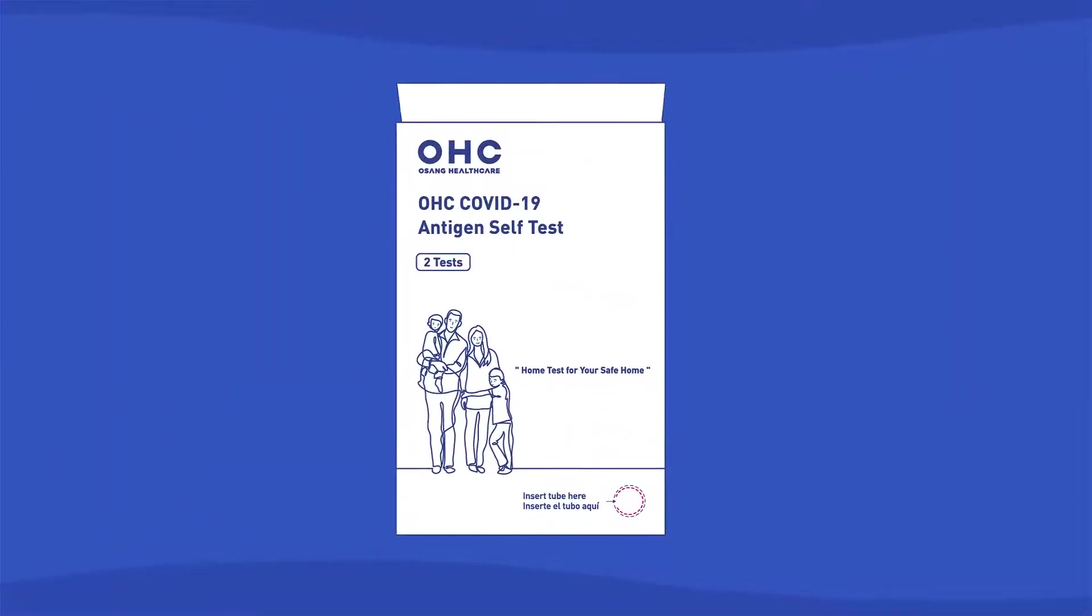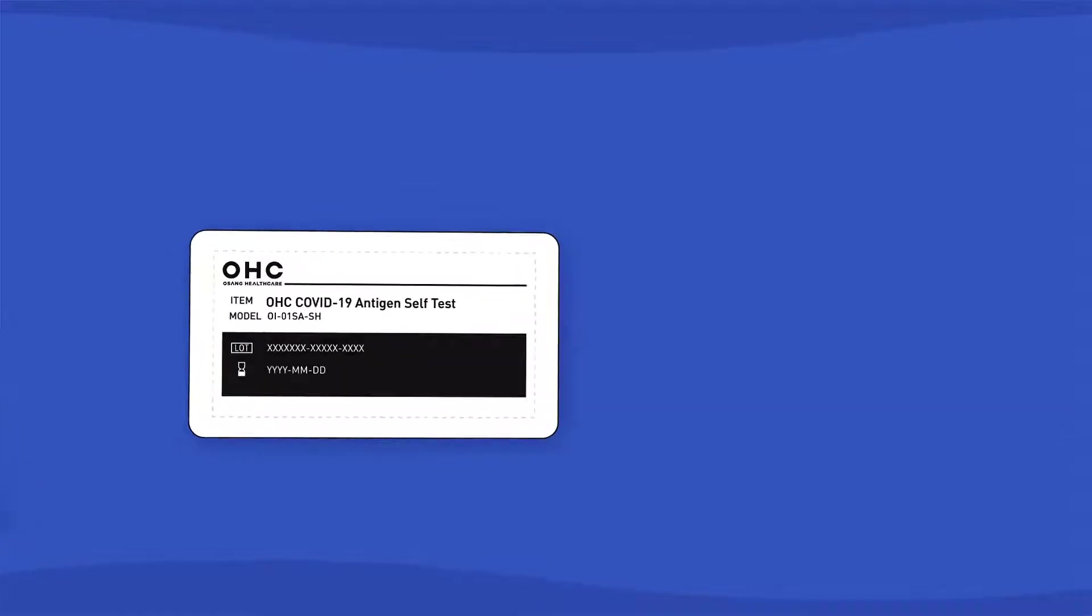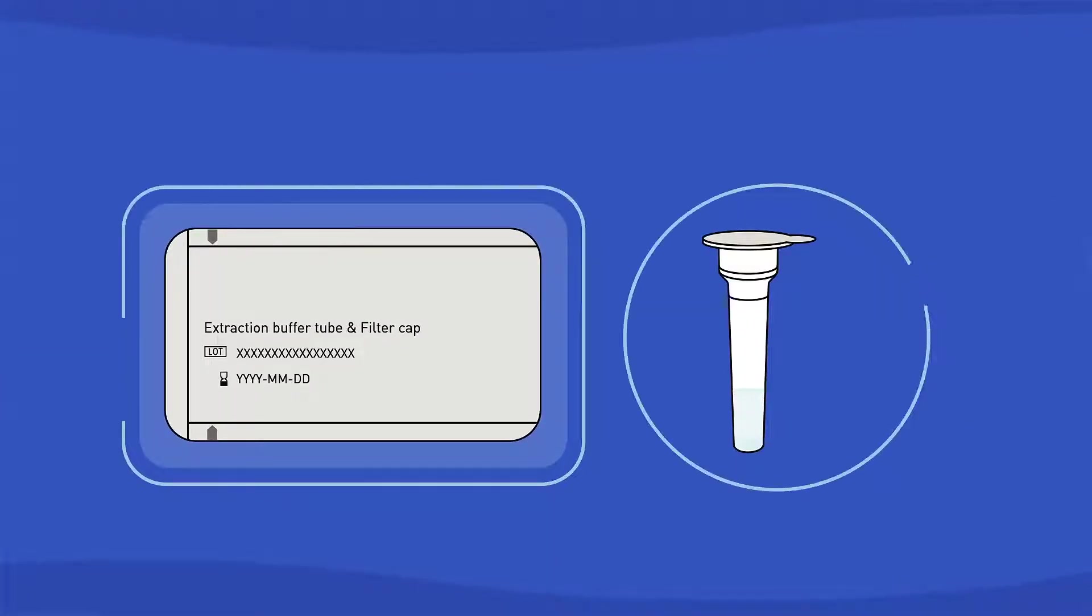Package Contents. First, let's make sure you got everything you need. The test components include the test cassette, extraction buffer tube, filter cap, and the nasal swab.